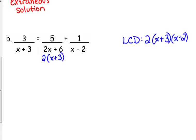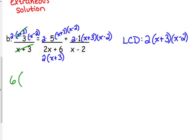So, 2 times x plus 3 times x minus 2. 2 times x plus 3 times x minus 2. 2 times x plus 3 times x minus 2. Don't multiply it out. Let's see what cancels. So in the first one, the x plus 3's cancel, so I'm going to go ahead and multiply 2 times 3 to give me 6.